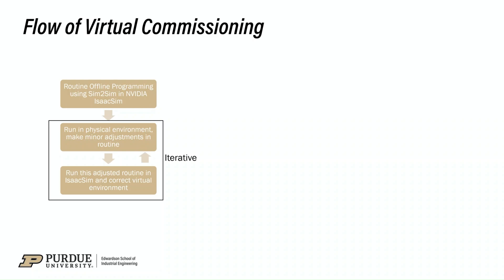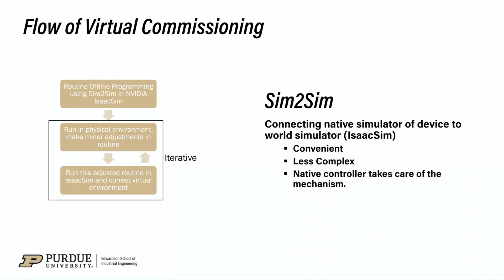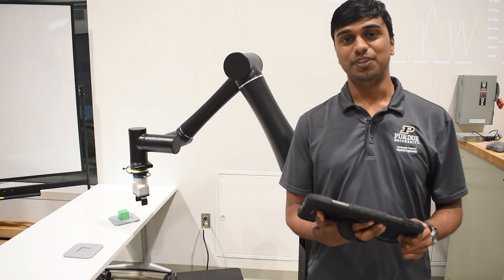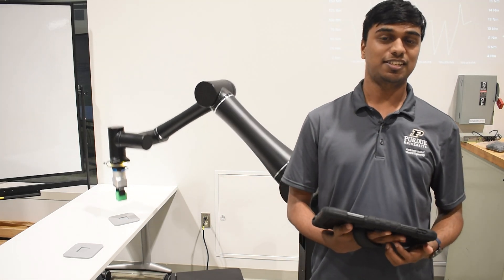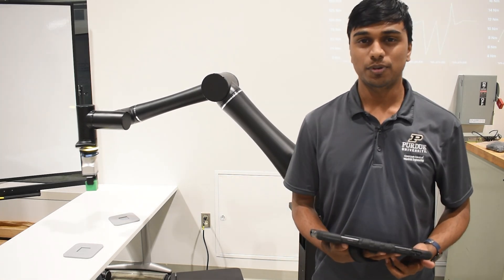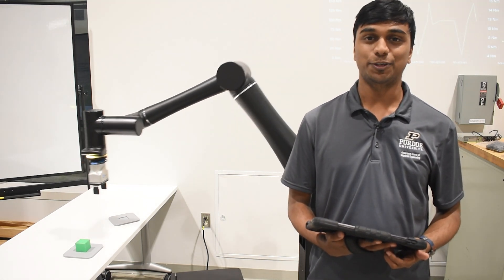In this method, we termed this concept as Sim2Sim — we connect the simulator of the Cobot to a world simulator, which is IsaacSim. This method is convenient, less complex, and the native controller takes care of the Cobot. In this video, we learned how to program a Cobot in a virtual environment using this extension. I hope you liked this video and stay tuned for more content on manufacturing automation. Thank you!